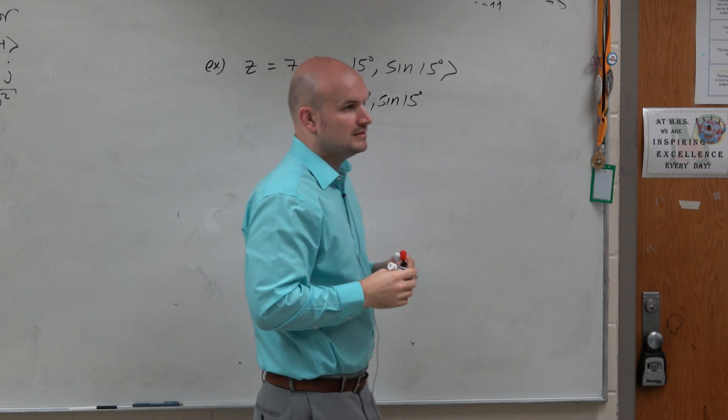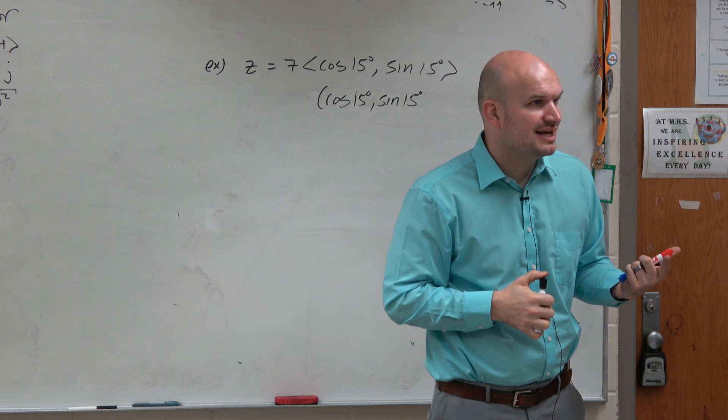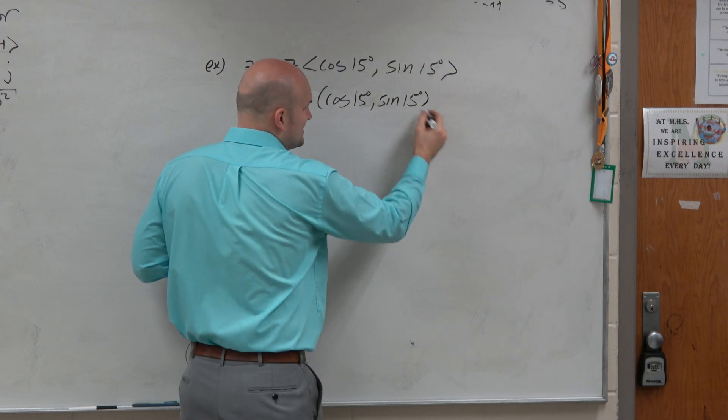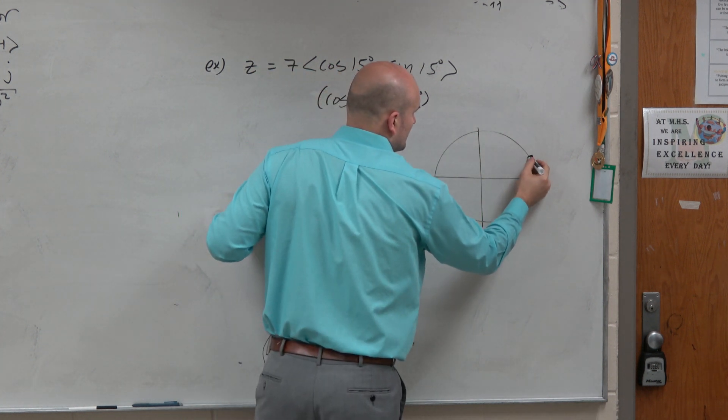When we do that, what does that give us? That gives us a point on the unit circle. So if this gives us a point on the unit circle, which we have no idea what that point is, or at least we could figure it out.